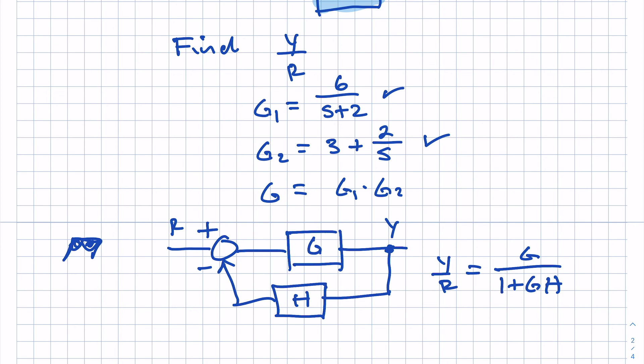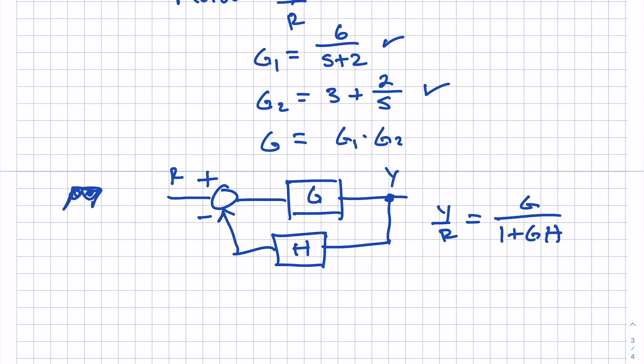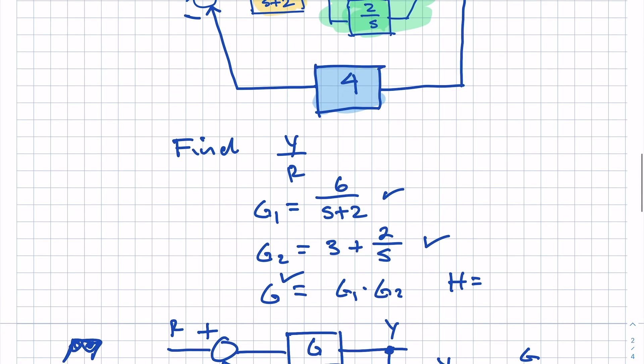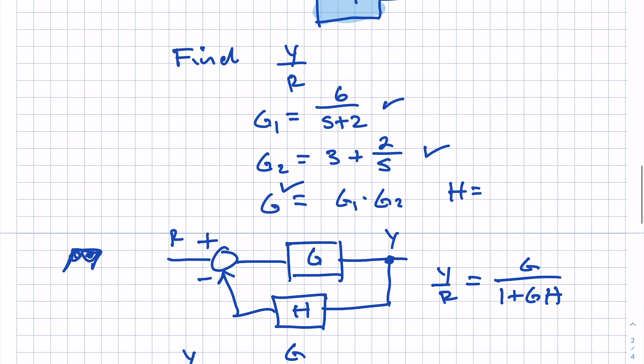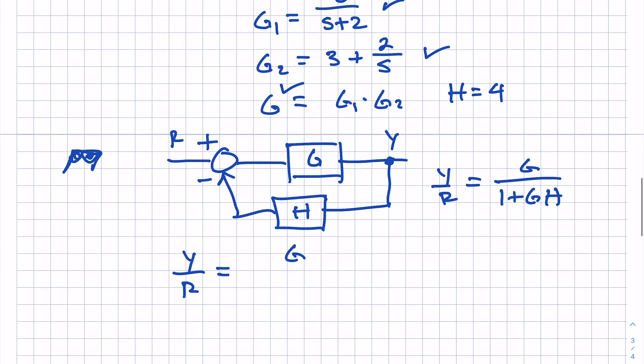And now that I know that, I can write down the transfer function. Y over R is G, which we have defined. And then H is going to be simply 4 in the example. Here's H. G over 1 plus G H. And now it's just a matter of simplifying everything.